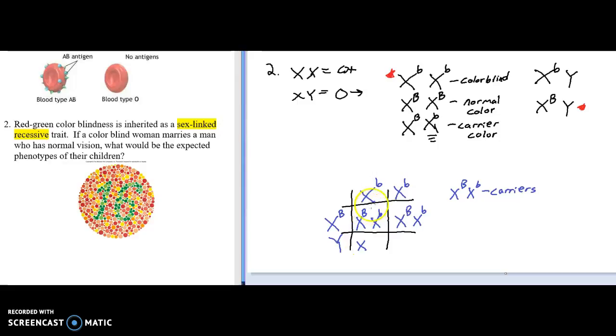Now, the sons, mom's going to give an X with a little b to her son. Dad is going to give a Y chromosome. That's what makes it his son. If mom's other X combines with dad's Y, the son is still colorblind. X little b and Y equals a son or sons who are colorblind.